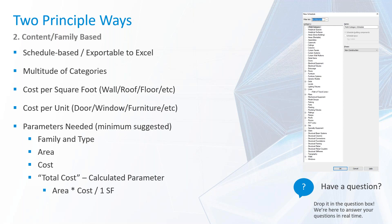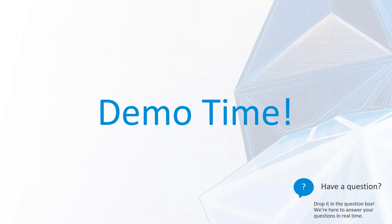Some parameters needed for this type of schedule: you're going to need your family and type, you're going to need area, you're going to need cost, and then again you are going to need a calculated parameter of area times cost — divide that by one so that the units cancel each other out. Everyone remembered their math classes from high school! So with that, let's hop into Revit and look at some of this in real time.